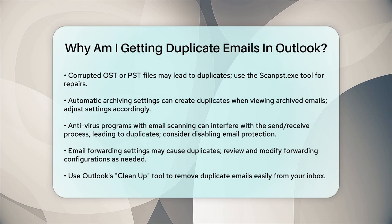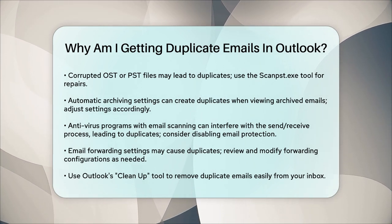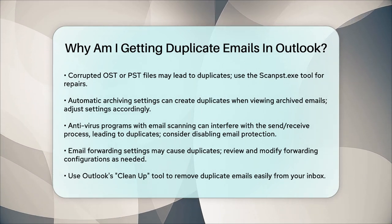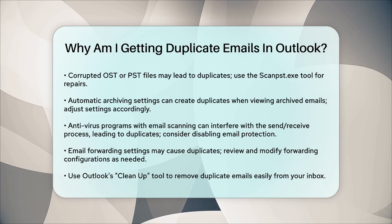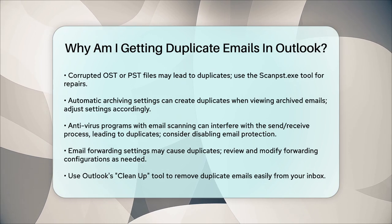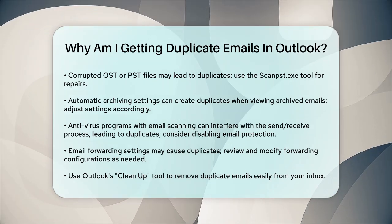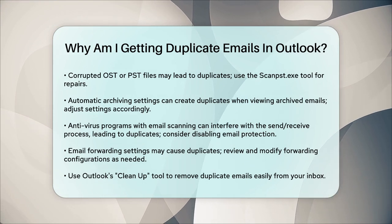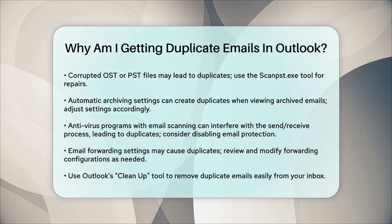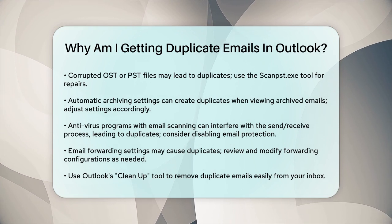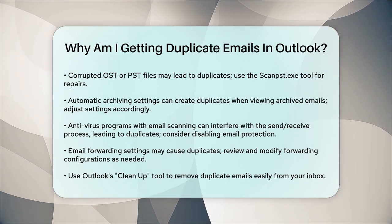To remove duplicate emails, you can use Outlook's built-in cleanup tool. Navigate to the folder with the duplicates, go to the Home tab, and select the appropriate cleanup option to remove redundant messages. By identifying and addressing these common causes, you can prevent and remove duplicate emails in Outlook, making your email management much more efficient.